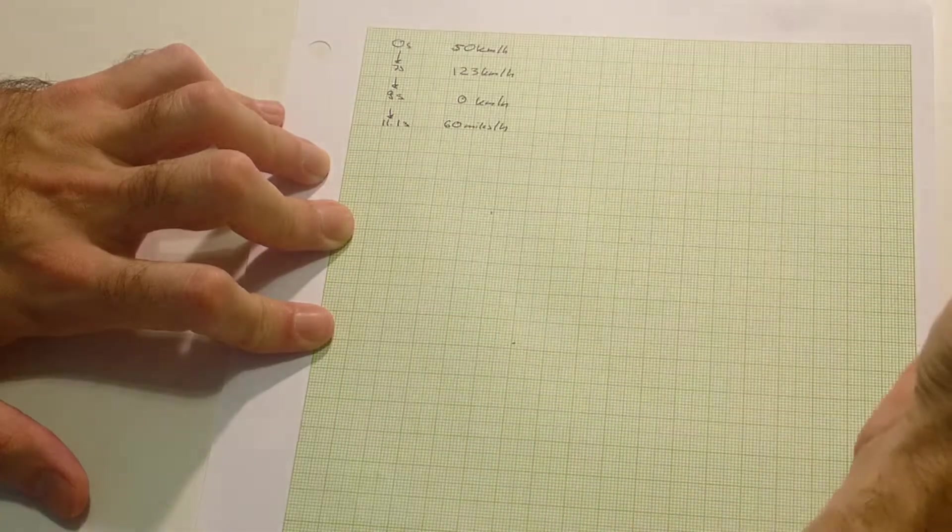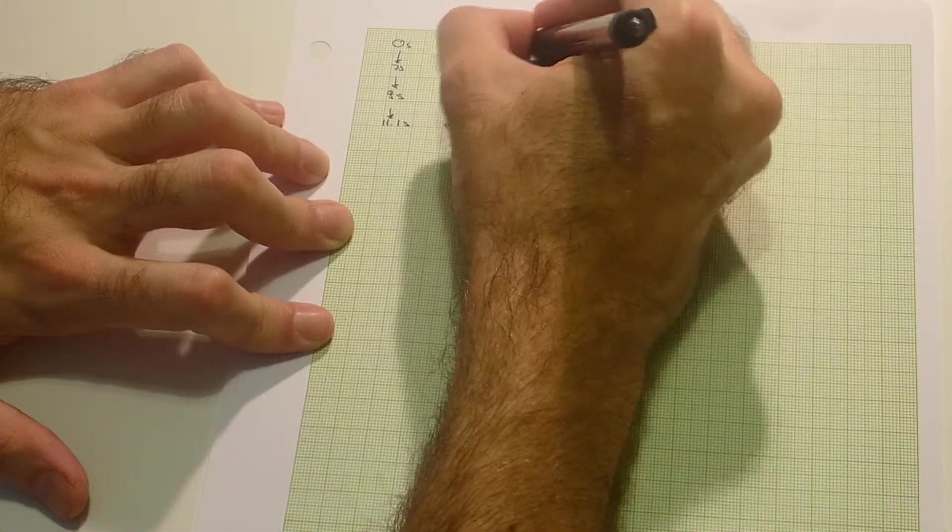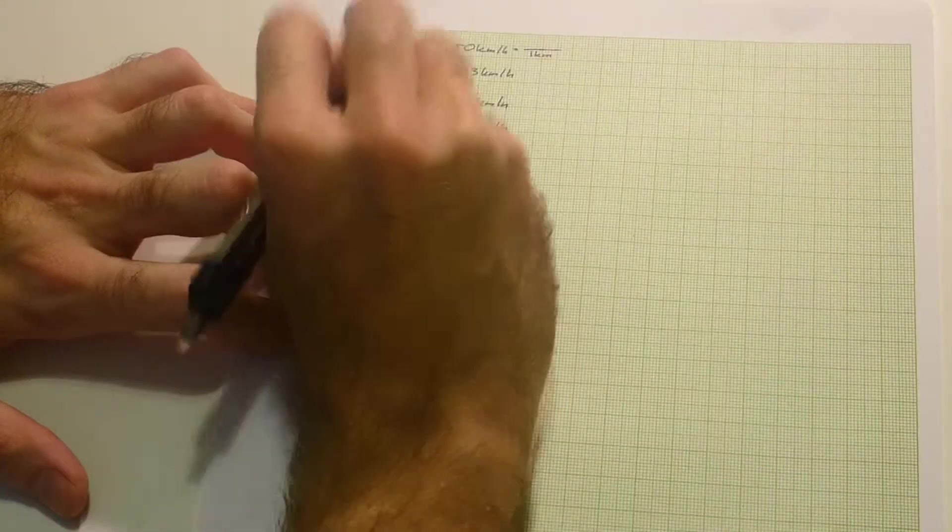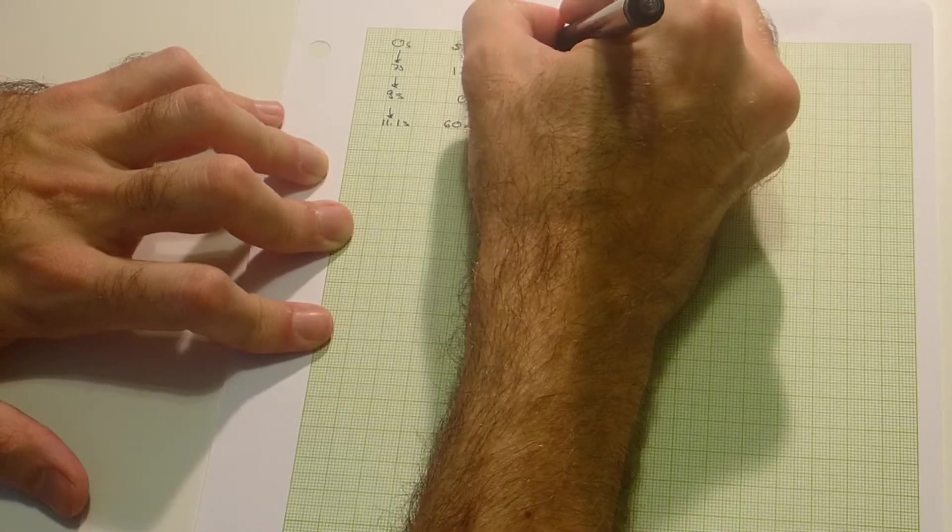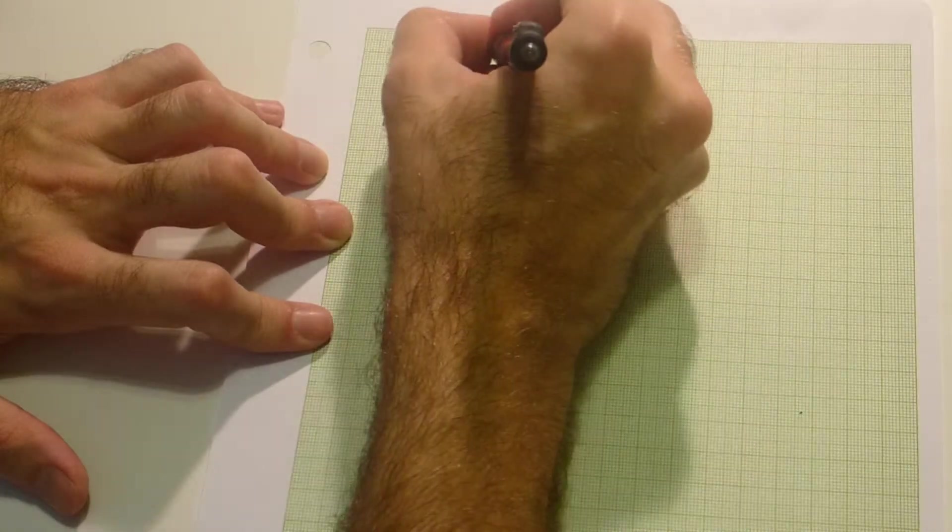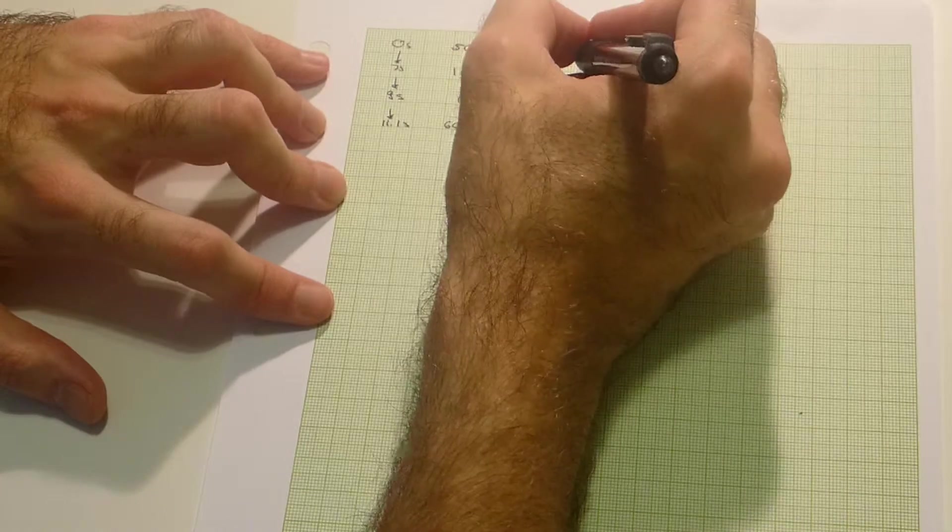Let me start with the 50 km an hour. I want to get rid of the kilometers, therefore I divide by 1 km. Now what's 1 km? It's 1000 meters. I want to get rid of the hour because what I want to end up with is meters per second. Therefore I multiply by 1 hour.